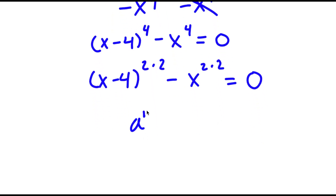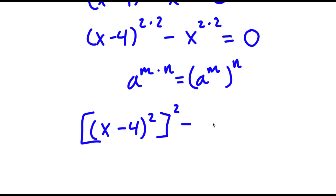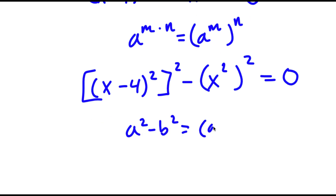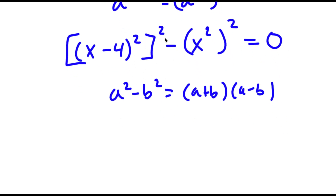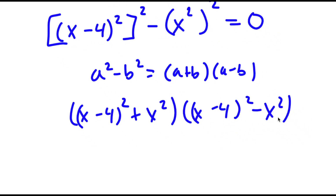If I have something in the form a to the power of m times n, this is equal to a to the power of m to the power of n. So x minus 4 to the power of 2 times 2 equals x minus 4 squared to the power of 2, minus x to the power of 2 times 2, which is x squared to the power of 2. Now, if I have something in the form a squared minus b squared, this equals a plus b times a minus b. So that gives x minus 4 squared plus x squared times x minus 4 squared minus x squared, all equal to 0.